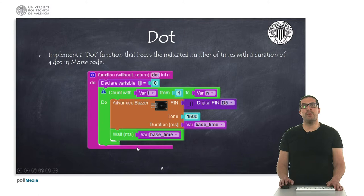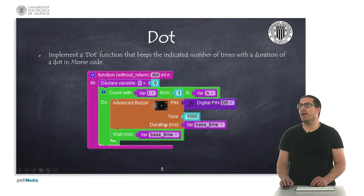In this first example, as I said, we are going to code into Morse code the SOS message. First, I will introduce the dot function. I have implemented the dot function in which, depending on an input argument I provide to the function, I can generate as many dots as I want. And then this will generate very short beeps on the buzzer. This is how to implement these short beeps. And the base time is a variable that I will define in my main loop.